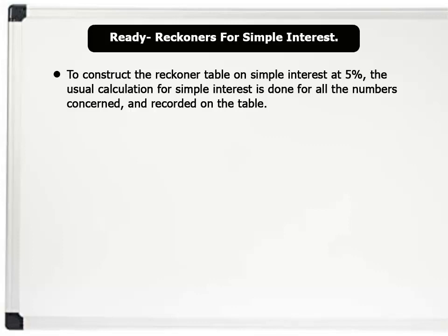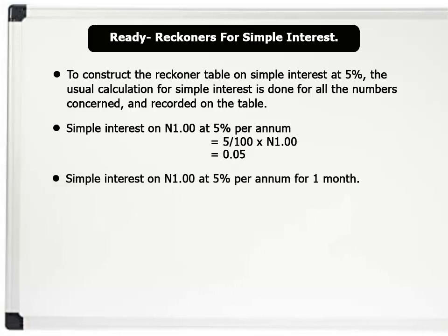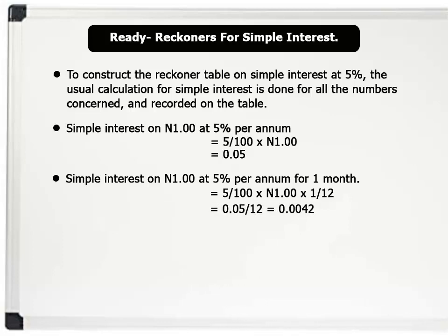the usual calculation for simple interest is done for all the numbers concerned and recorded on the table. For example, simple interest on 1 nara at 5% per annum is 5 over 100 times 1 nara, which equals 0.05. Times 1 over 12, which equals 0.05 divided by 12, and that gives us 0.0042.